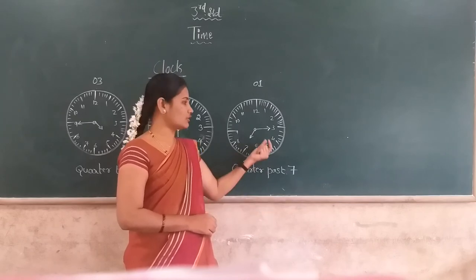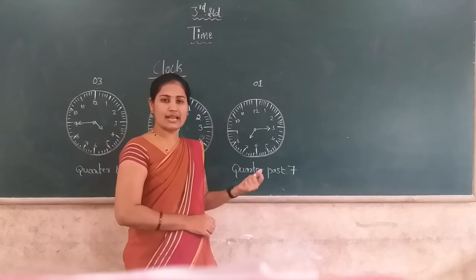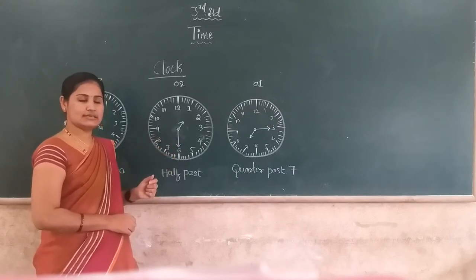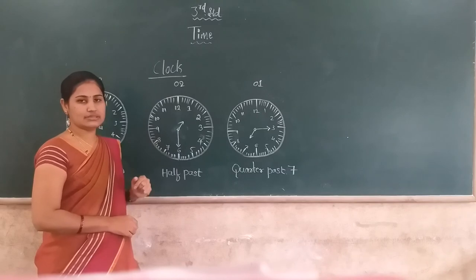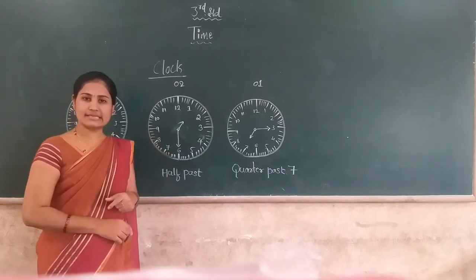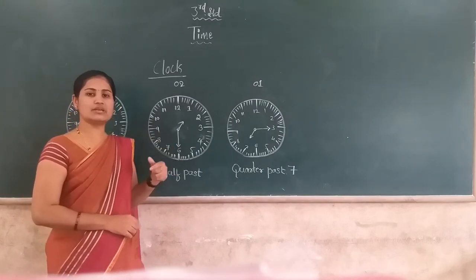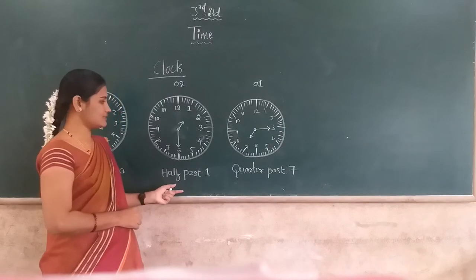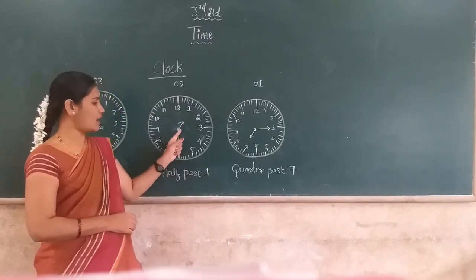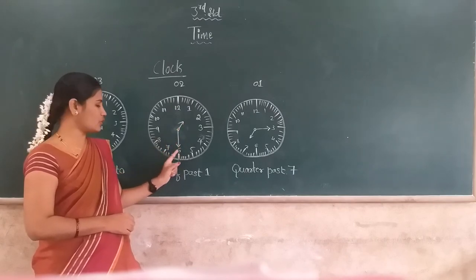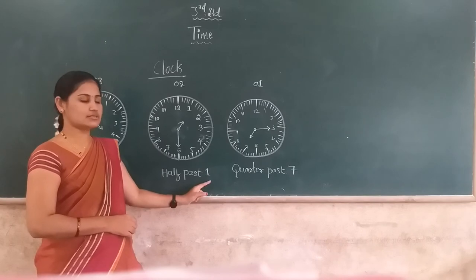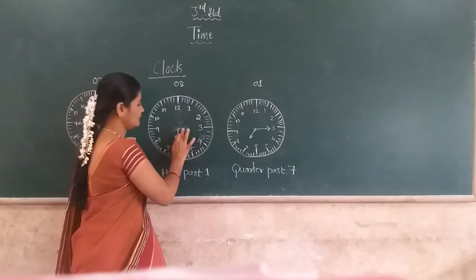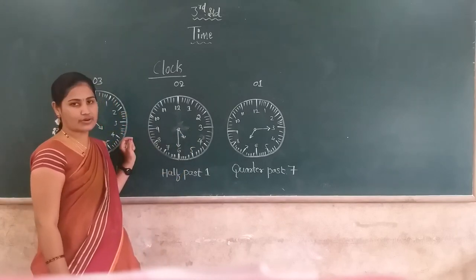In the second clock, the minute hand is at 6 and the hour hand is at 1. When the minute hand is at 6, we call it half past. So the time is half past 1. When the hour hand is at 3, it is half past 3. When the hour hand is at 5, it is half past 5. Like this we can read the time by the position of the hour hand when the minute hand is at 6.